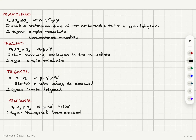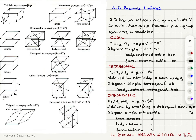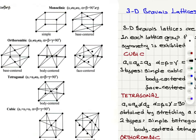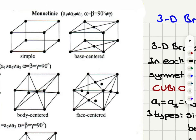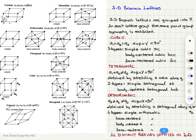Monoclinic has two types: simple monoclinic and base-centered monoclinic. So a1, a2, a3 are not equal, two angles are 90 degrees, and one angle is not 90 degrees.